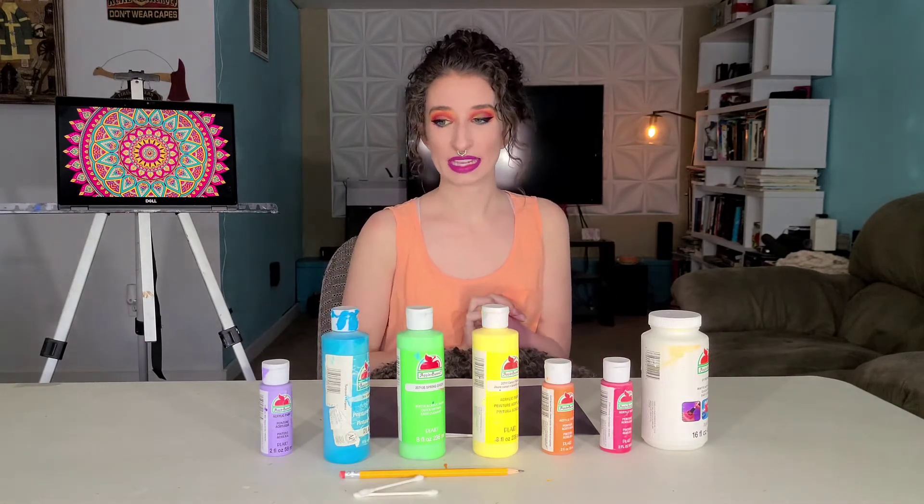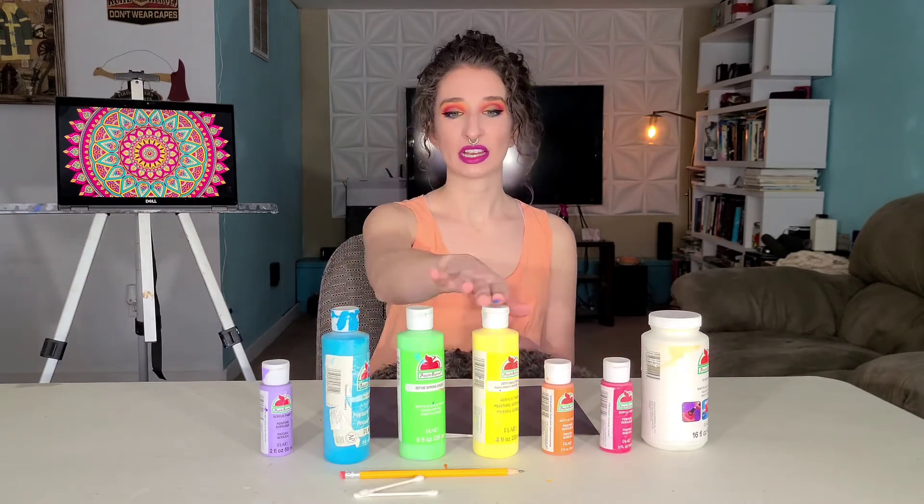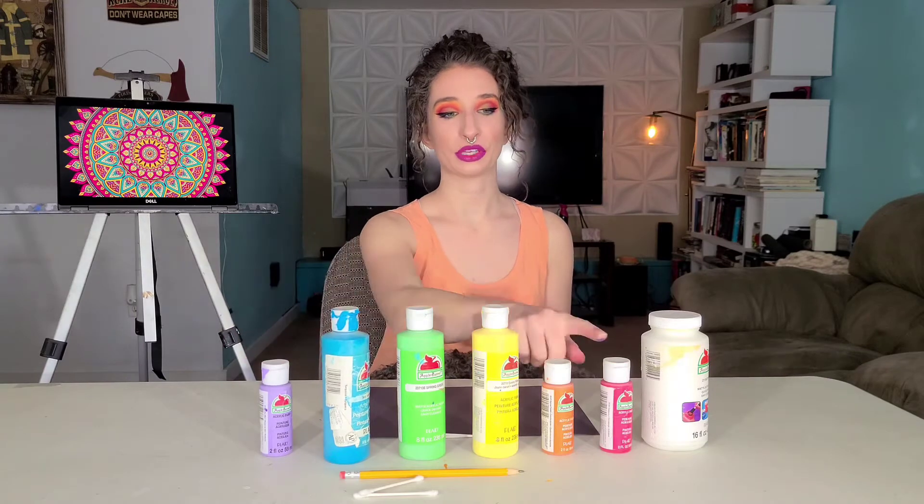For my colors of paint today I decided to use the colors of the rainbow. So we're gonna go in rainbow order. For those of you who don't know what the rainbow order is, it's just the way the colors progress. So it goes red, orange, yellow, green, blue, purple.